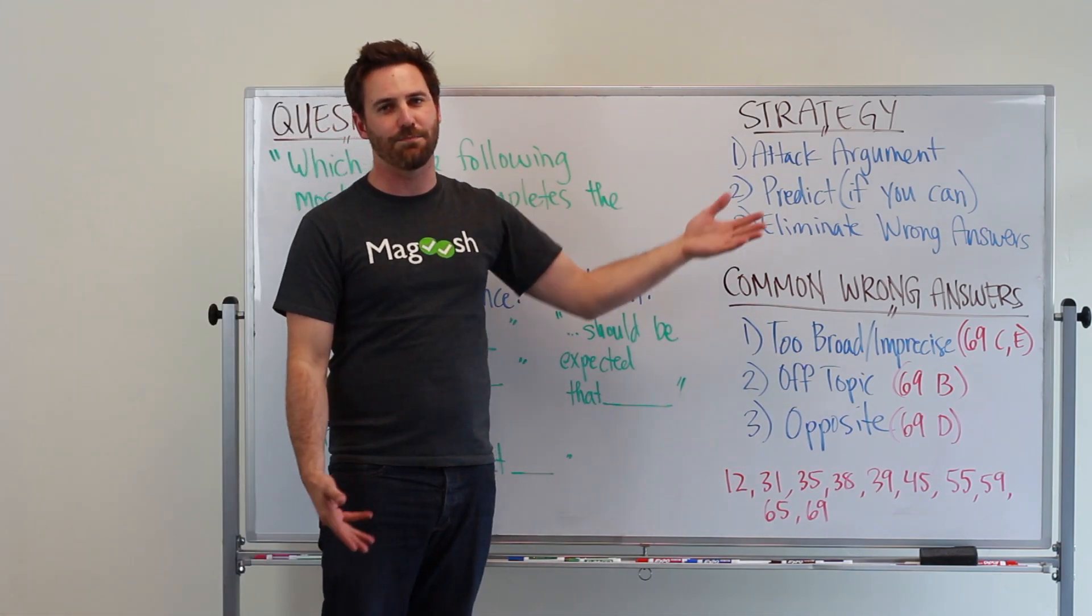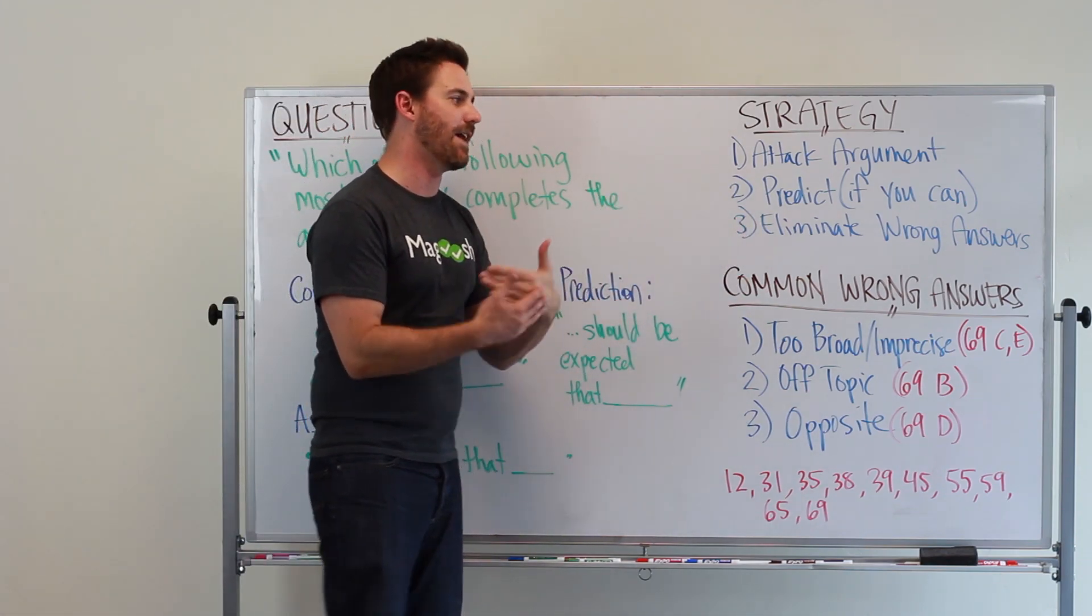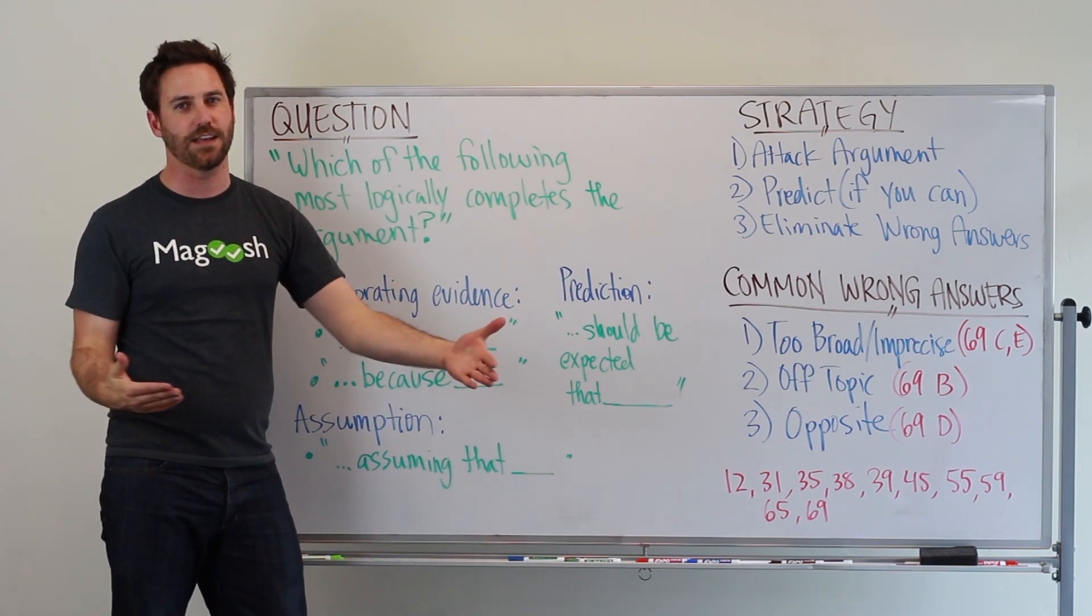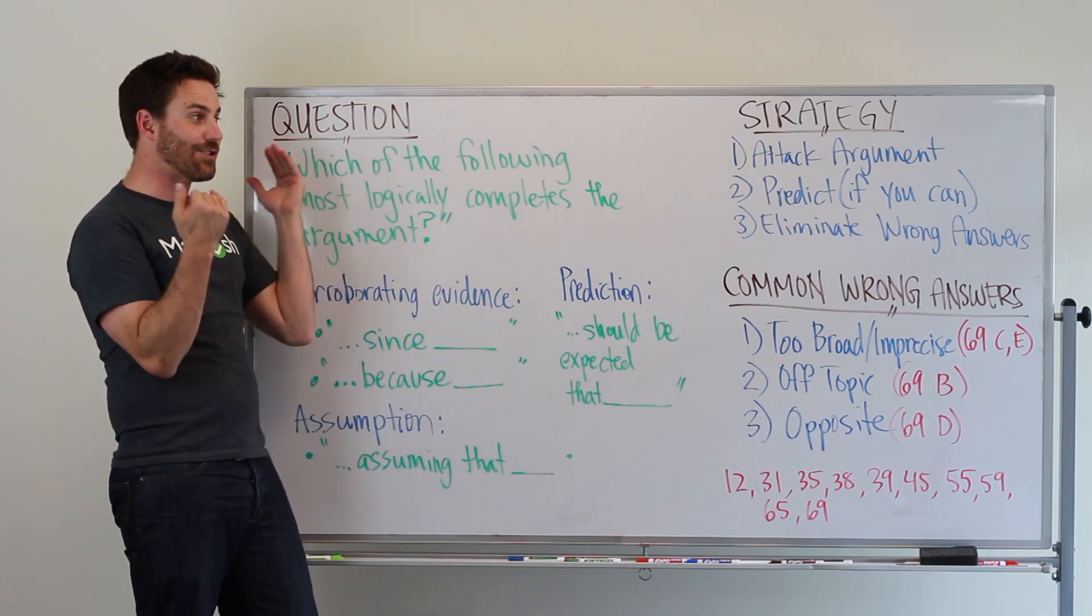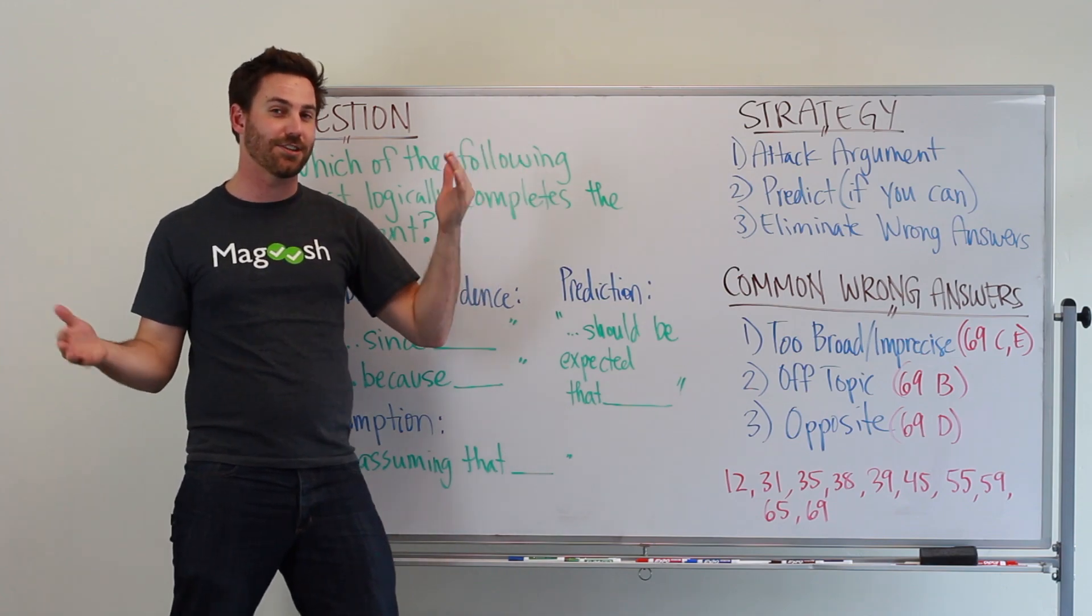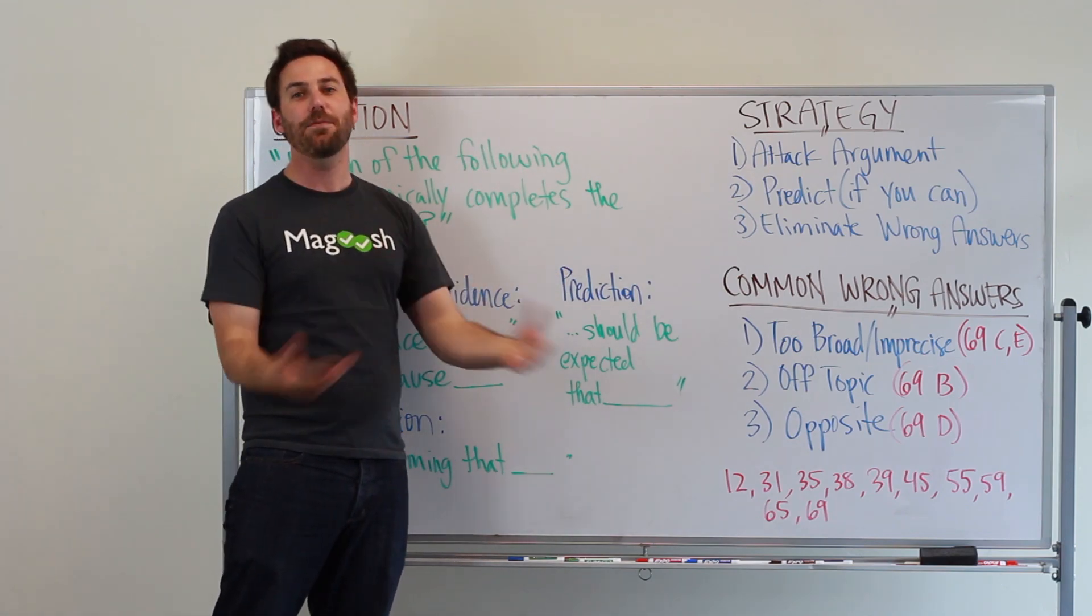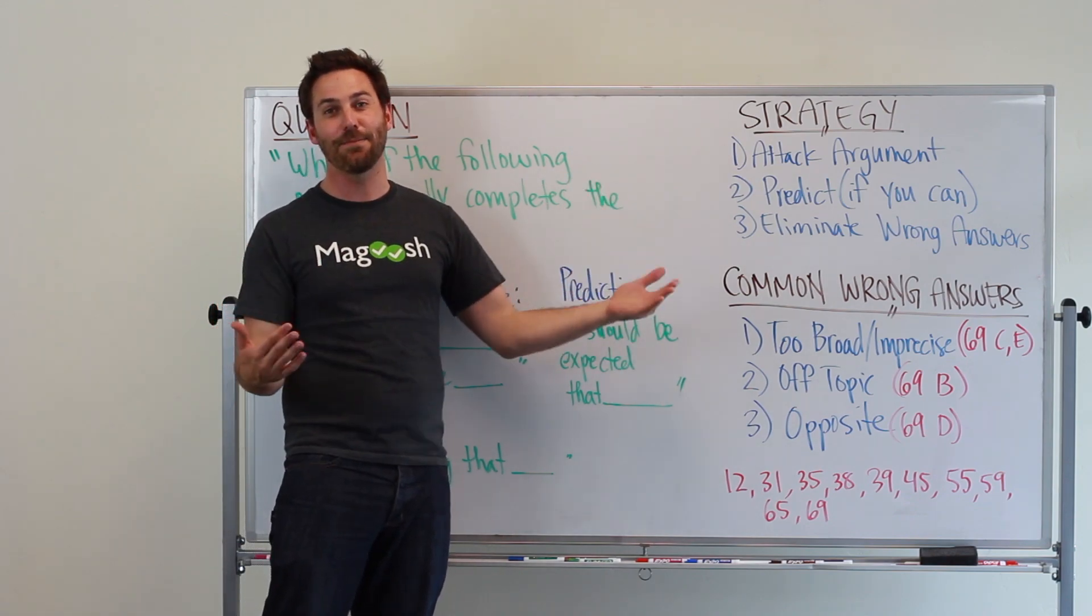Don't get stuck at this step. If you can't predict, that's okay. Move on to step three, which is eliminate wrong answers. We always want to dive into the answer choices and find answers that don't work. There's a lot more answers that don't work than do work, so you should always be working from that premise of I'm going to find wrong answers and then eliminate them.